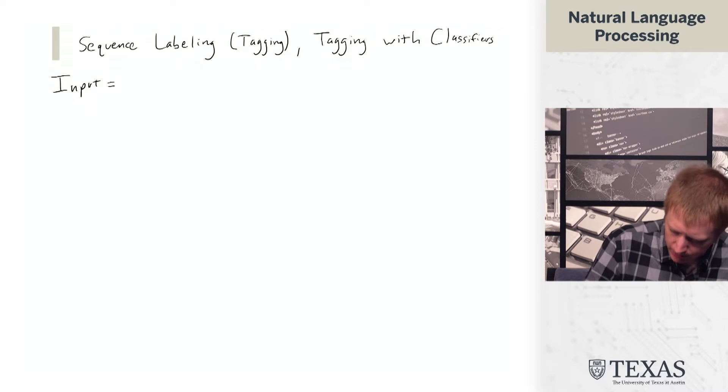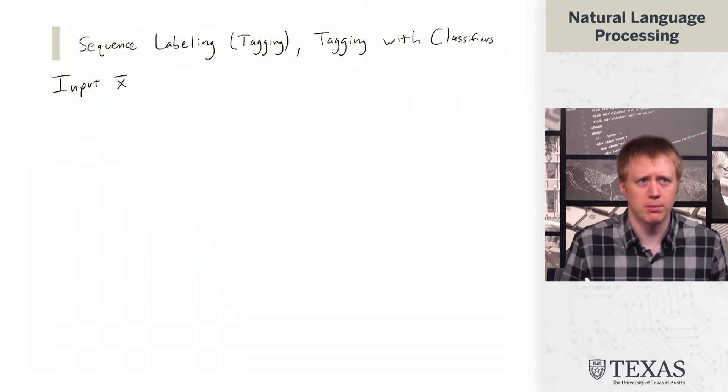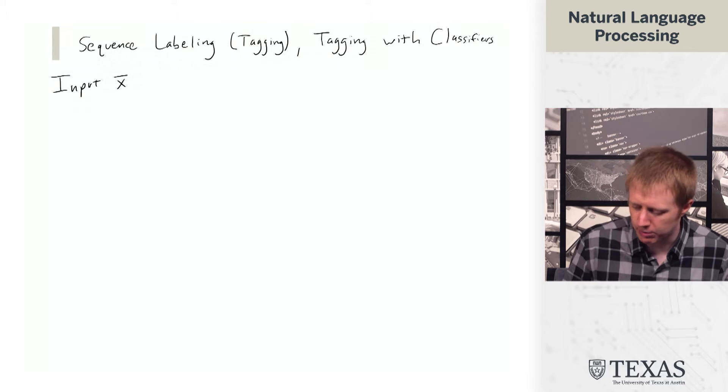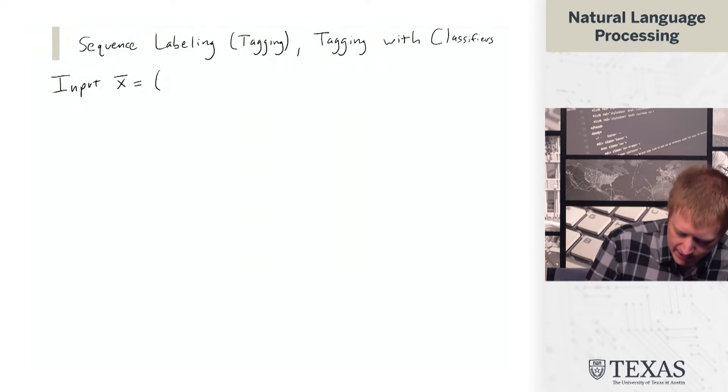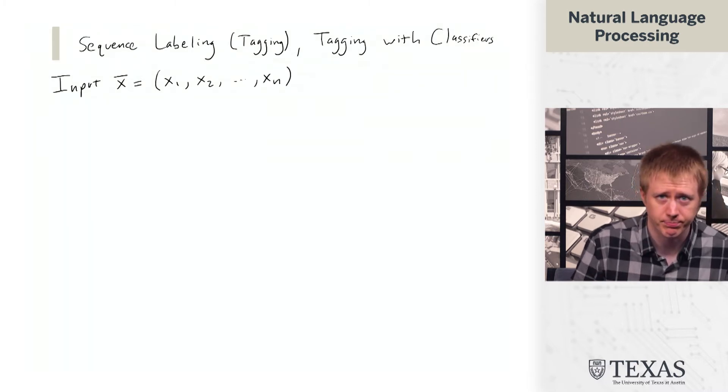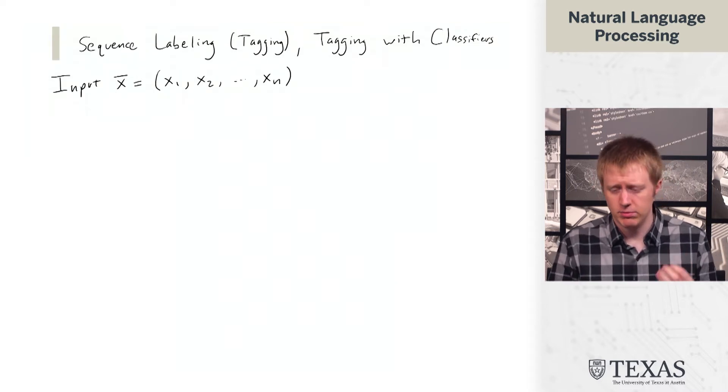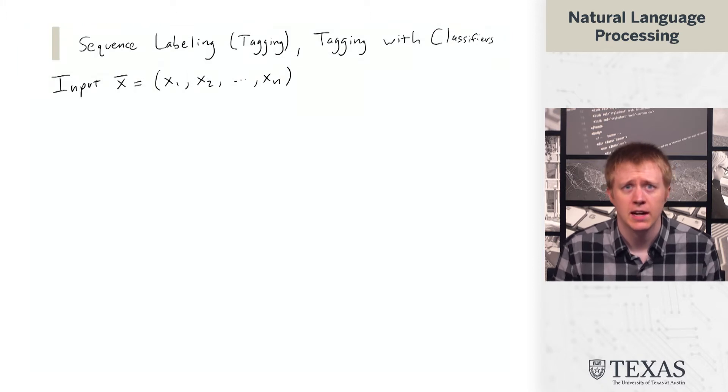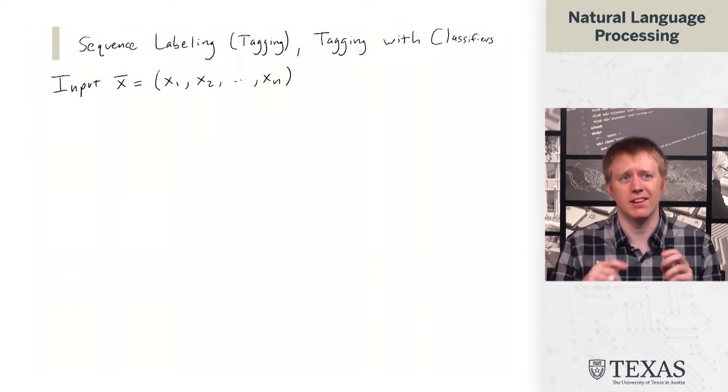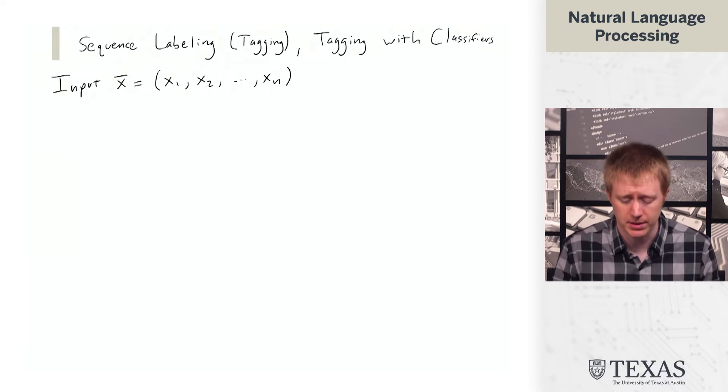So the idea behind sequence labeling is that we have an input which we are going to represent as x here, and we're going to think of this as a sequence of what in our case is going to be words x1 through xn. Previously when we thought about extracting features, we didn't necessarily think about the words as this sequentially structured object. Now we're going to think about them in this way.